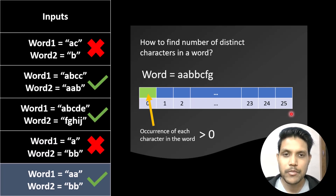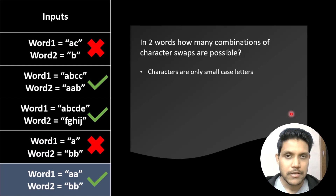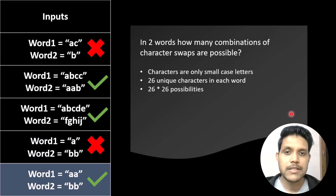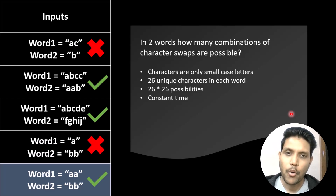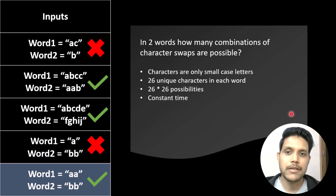The second key question is: how many combinations of character swaps are possible between two words? Since characters are only lowercase letters, there are at most 26 unique characters per word, giving at most 26×26 possibilities. Because the number of possibilities is constant, it takes constant time to go through all of them. By iterating all 26×26 possibilities and checking if any swap results in equal distinct character counts, we can return true; otherwise false.